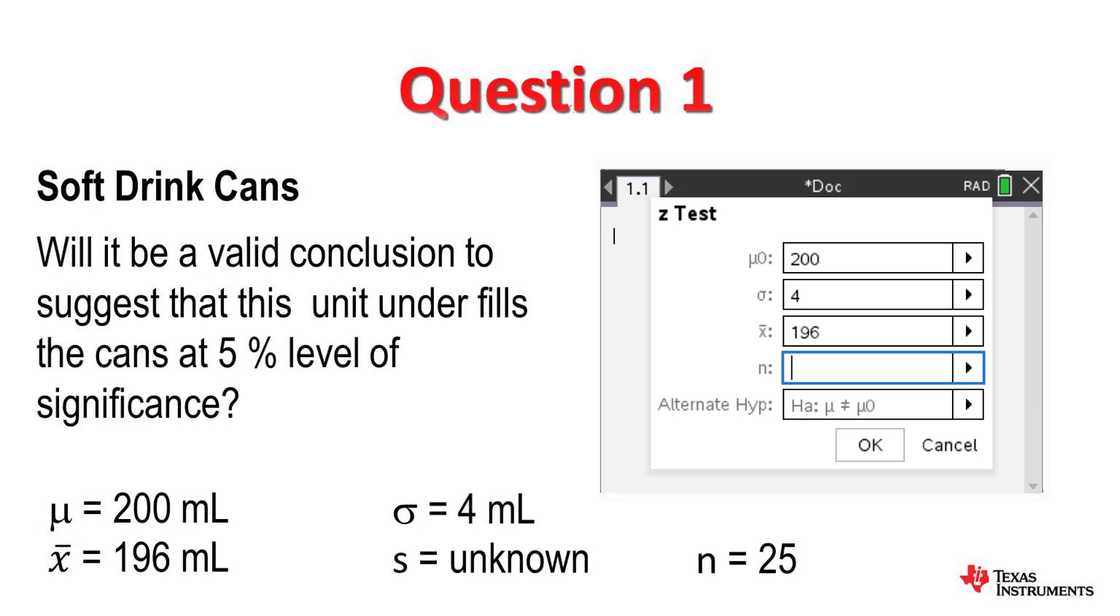Now the alternative hypothesis is what we need to check over here. We are saying new mean is less than the actual mean, so we are using that option there.